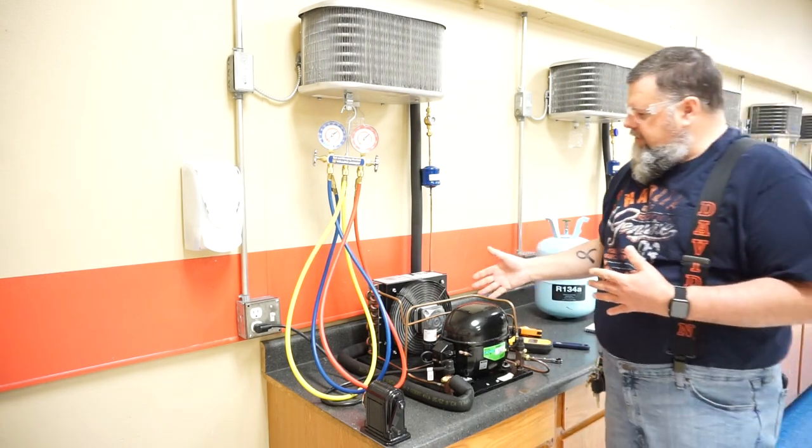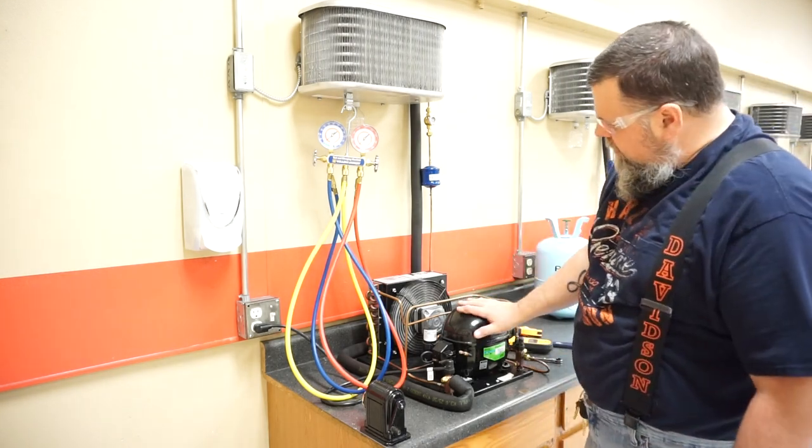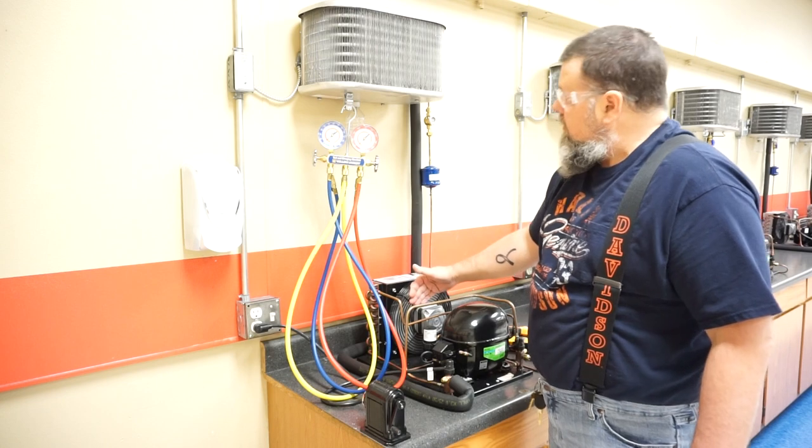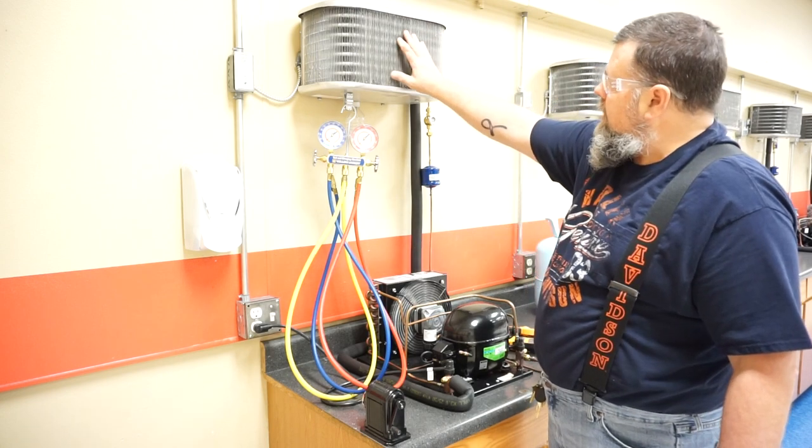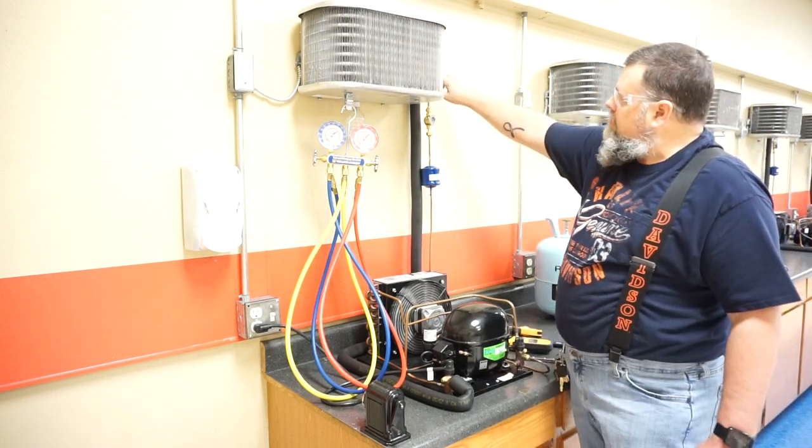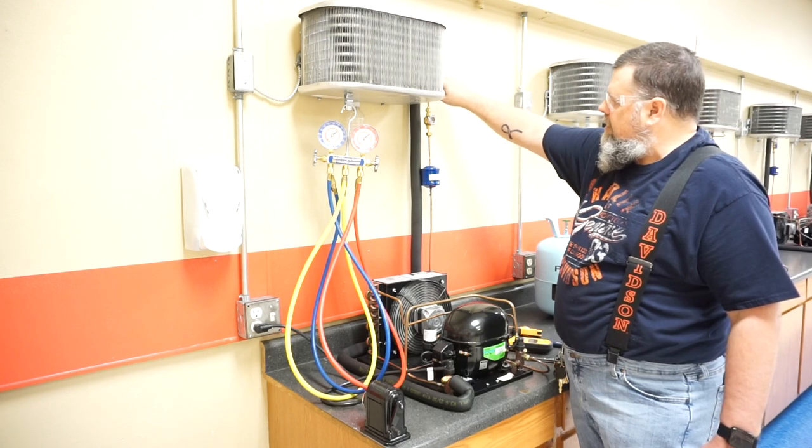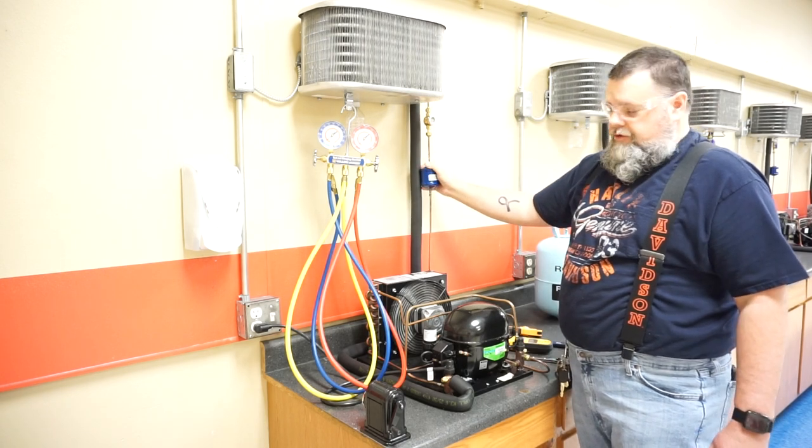So first thing, we've got our little system here. We've got our compressor, our condenser with fan, our evaporator with fan. On this side you can't see it, but there's your metering device right here. We also have a sight glass and liquid line filter dryer.